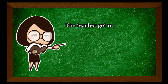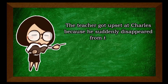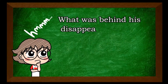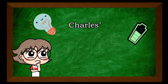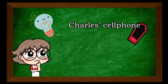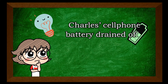The teacher got upset at Charles because he suddenly disappeared from the class. What was behind his disappearance from the virtual class? Charles' cell phone battery drained off.